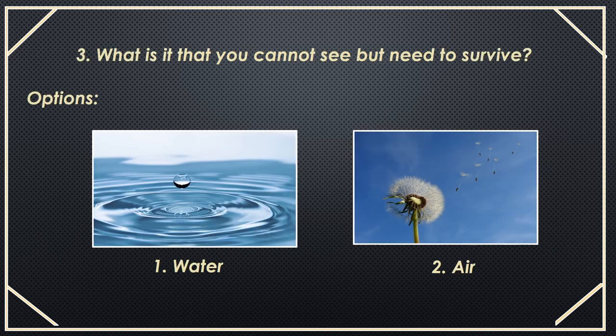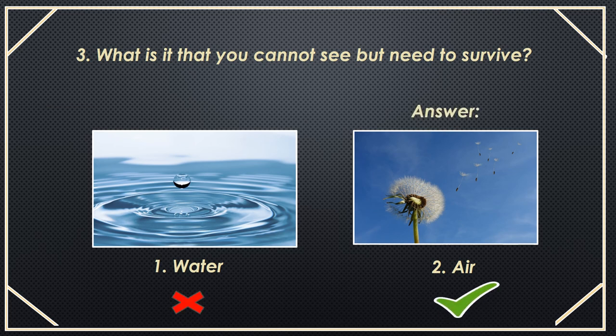Third question: what is it that you cannot see but need to survey? Options — first option: water. Second option: air. Answer is air. We cannot see the air, but we can see the water.